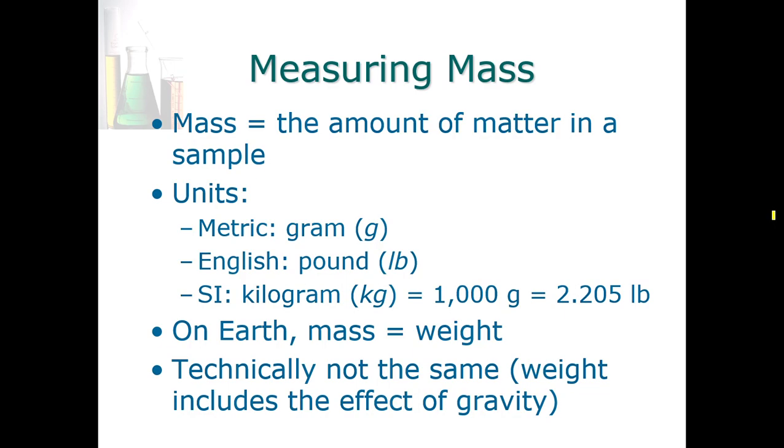For example, an astronaut who weighs 190 pounds, that is equivalent to about 86 kilograms on the surface of the Earth. In outer space, that astronaut would have zero pounds of weight. However, he or she would still have 86 kilograms of mass. We don't have to worry about that because we're not going to be doing experiments in outer space anyway.